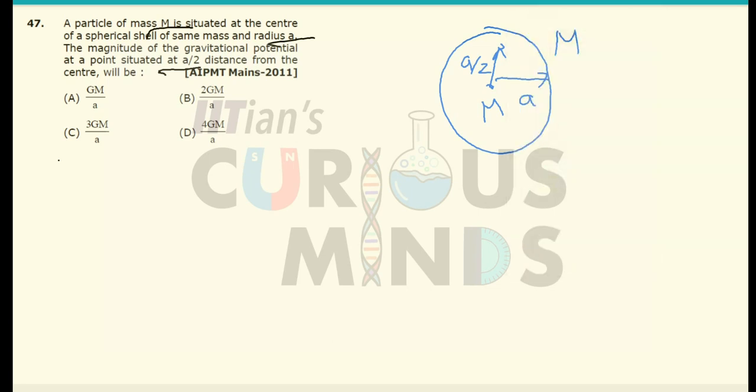Now basically the total potential will be equal to the potential due to the shell plus the potential due to the particle.